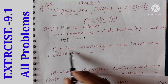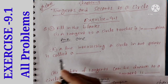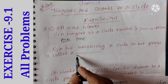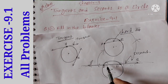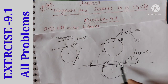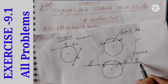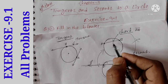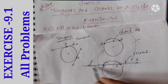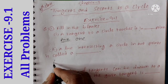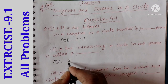Next, second point: a line intersecting a circle in two points is called a secant. The answer to the second point is secant.